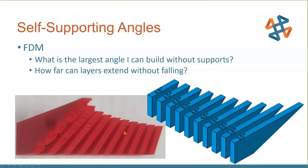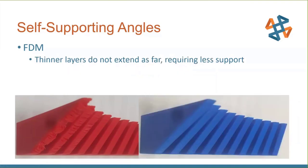I built another part also with no supports — and it looked a lot better, even at 20 degrees. The difference: the red one is built at 10 thousandths layers and the blue one at 7 thousandths layers. Because thinner layers don't extend out as far, they require less support. It may take a little longer to build, but if you don't have to spend time cleaning, you can go as far as 20 degrees at 7 thousandths layers. Both are built with ABS material.